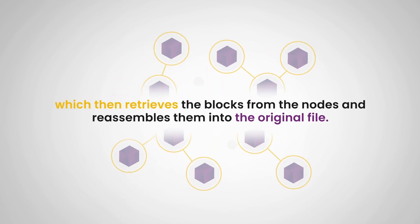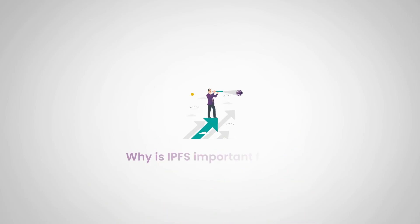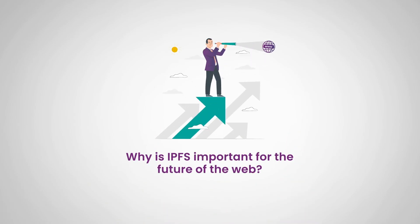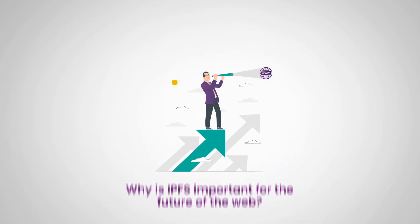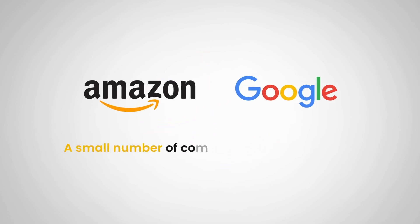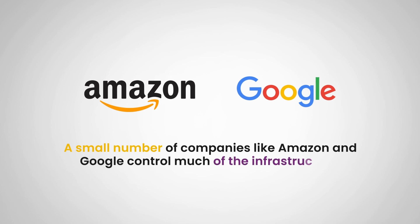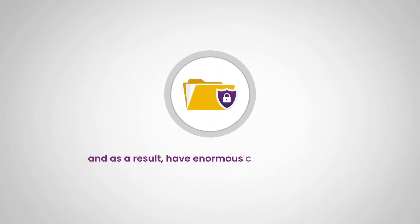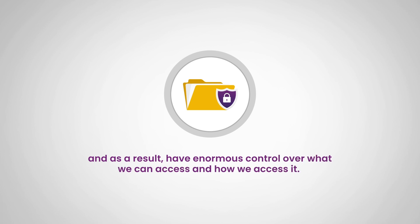And reassembles them into the file. So why is IPFS important for the future of the web? One of the biggest problems with the current web is that it's becoming increasingly centralized. A small number of companies like Amazon and Google control much of the infrastructure, and as a result have enormous control over what we access and how we access it.